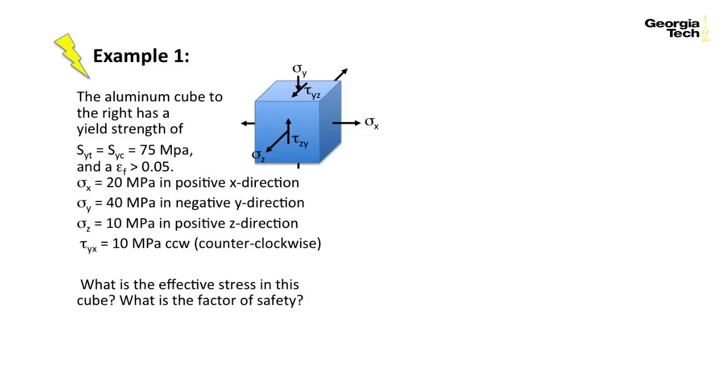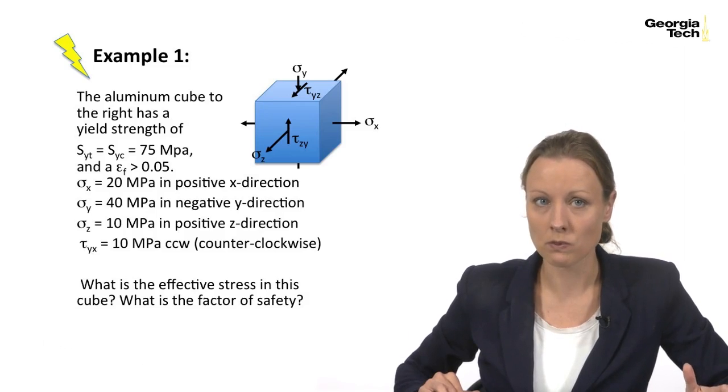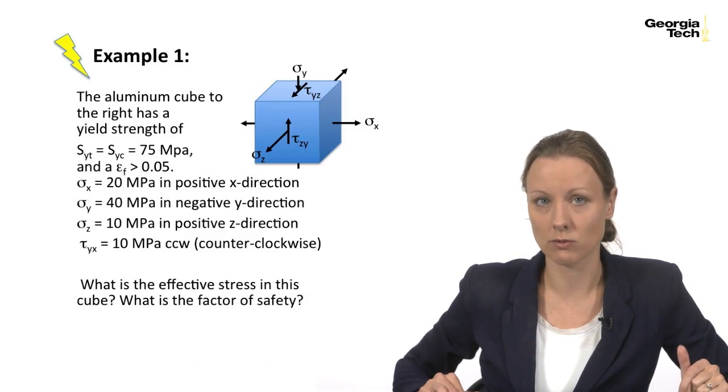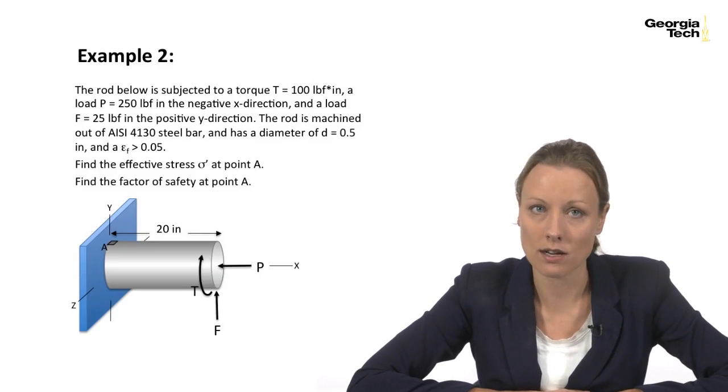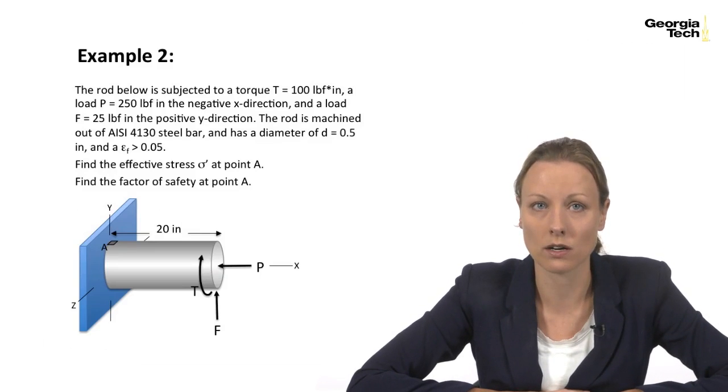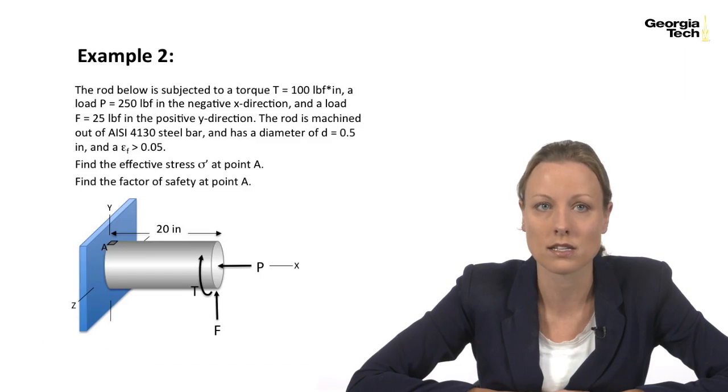That's a relatively straightforward von Mises example. Let's look at one that's a little bit more complicated. Here we have a rod, and it's subjected to a torque T equals 100 pounds of force per inch. We have a load P in the negative x direction of 250 pounds, and a load F in the positive y direction of 25 pounds of force.